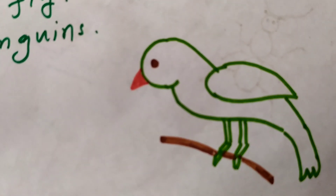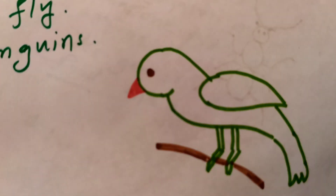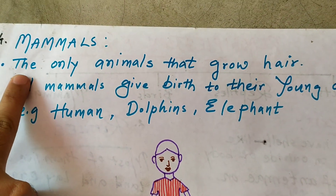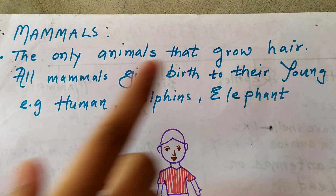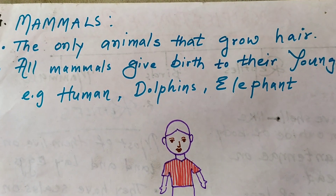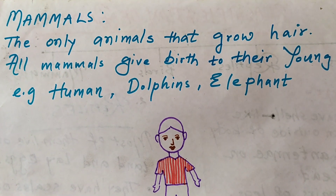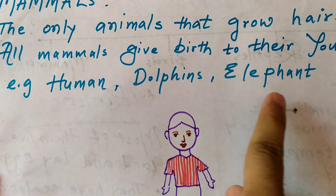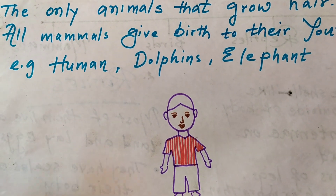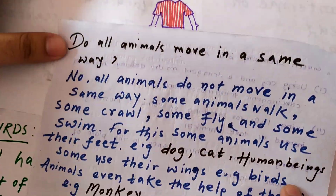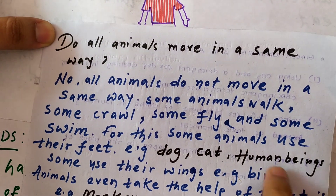The last category is mammals. First point: mammals are the only animals that grow hair. Second point: all mammals give birth to their young ones. Examples: please note — humans, dolphins, and elephants. You can see the diagram as well.